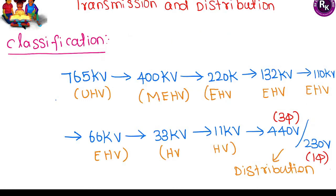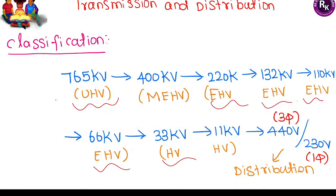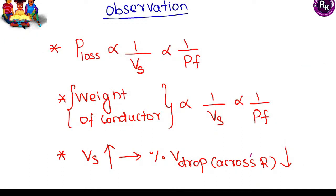Now discussing transmission and distribution. Starting from the highest voltage level: ultra high voltage transmission at 765 kV, then moving to MEHV, then EHV — all coming under extra high voltage transmission line. After that, we go to high voltage and medium voltage levels down to single phase. All voltage level values are noted here.